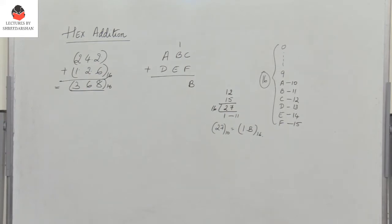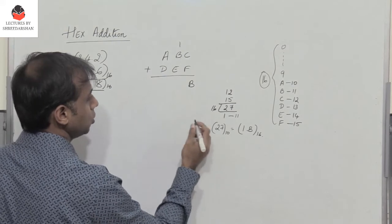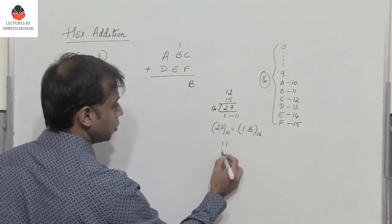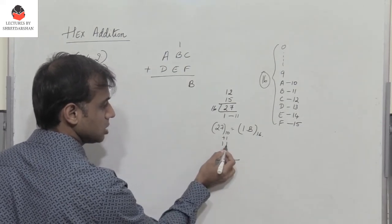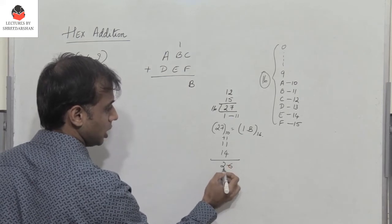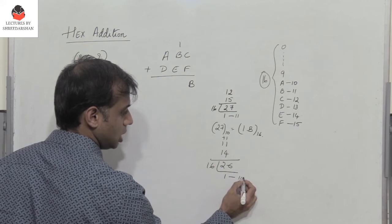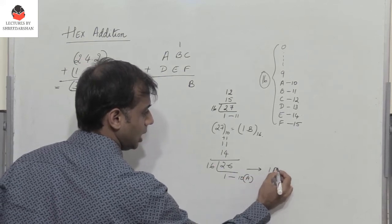Now I have E plus B plus 1. B is 11, E is 14, plus 1 equals 26. Dividing 26 by 16, I get 1 as quotient and 10 as remainder. 10 in hex is A, so 26 decimal is 1A in hex. I write A with a carry of 1.